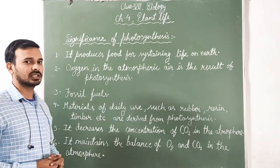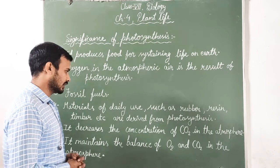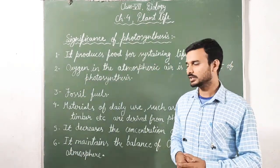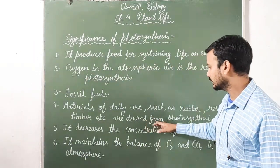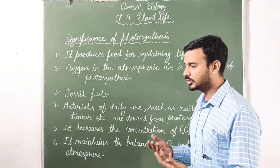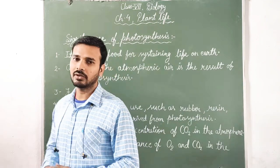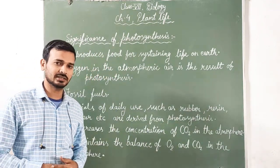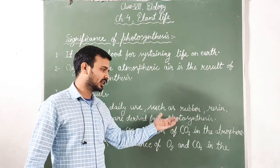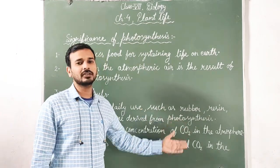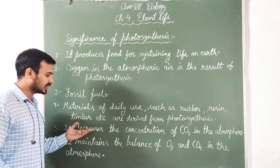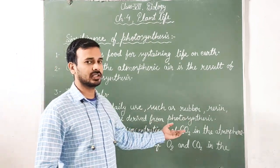Point four: materials of daily use, such as resin, timber, and rubber, are derived from plants. Plants carry out different processes to create such materials, and for that they need energy. That energy is produced by photosynthesis.